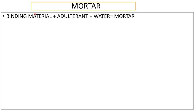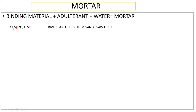If you take any binding material and add some adulterant to it, then add water, the mixture that forms is called mortar. The binding material can be anything — cement is a binder, lime is also a binder. The adulterant can be river sand, M sand (manufactured sand), surki, or sawdust. This mixture is called mortar.